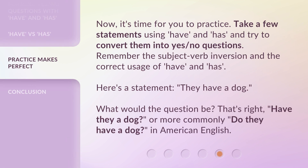Now it's time for you to practice. Take a few statements using 'have' and 'has' and try to convert them into Yes/No Questions. Remember the subject-verb inversion and the correct usage of 'have' and 'has.' Here's a statement: 'They have a dog.' What would the question be? That's right — 'Have they a dog?' or more commonly in American English, 'Do they have a dog?'